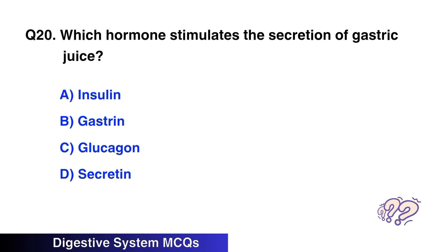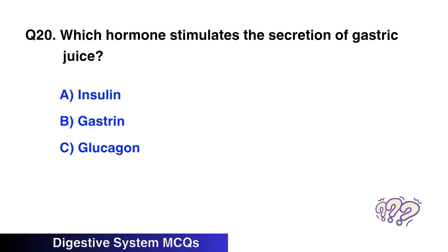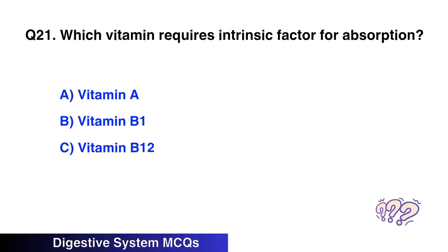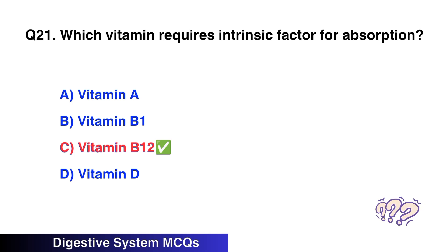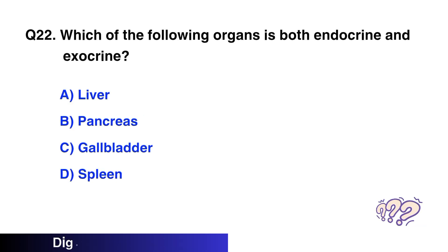Question number twenty: Which hormone stimulates the secretion of gastric juice? The right option is B, gastrin. Question number twenty-one: Which vitamin requires intrinsic factor for absorption? The right option is C, vitamin B12.